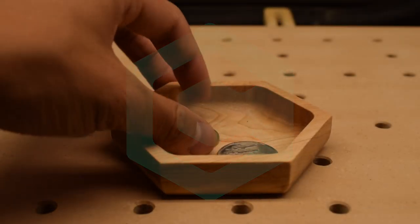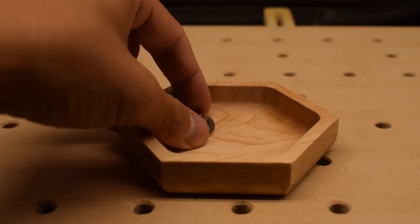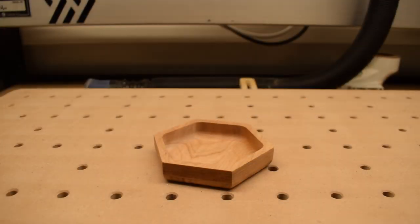Wooden trays with radiused bottoms not only look more refined, but they also make it easier to grab things out of them. So today, on Caturday, let's make a simple wooden tray using Carbide Create and a bowl bit on the Shapeoko.